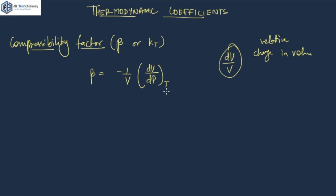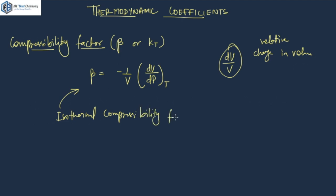This particular formula, since the temperature is constant, is also expressed as the isothermal compressibility factor, because you have taken temperature as constant. It is sometimes denoted by BT. BT is the isothermal compressibility factor when you take temperature as constant.